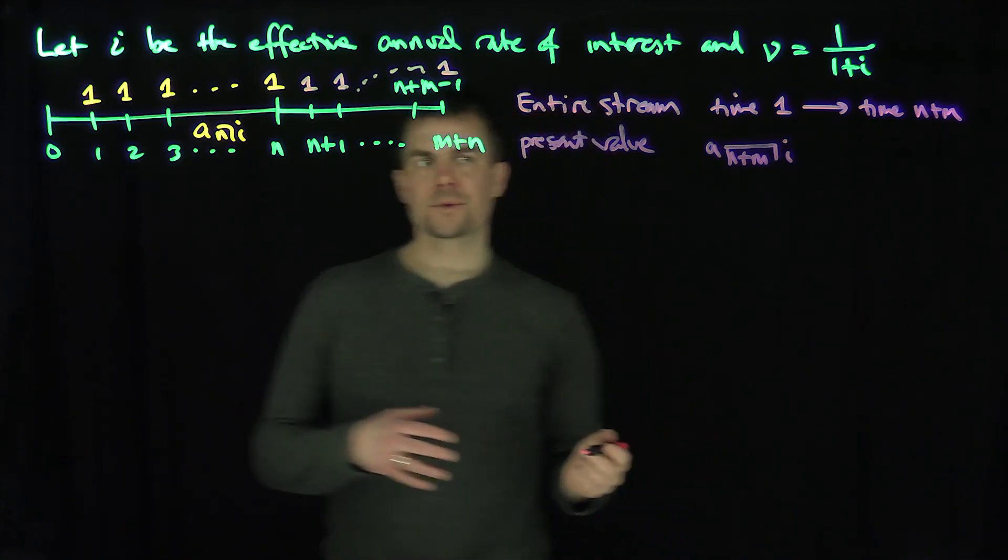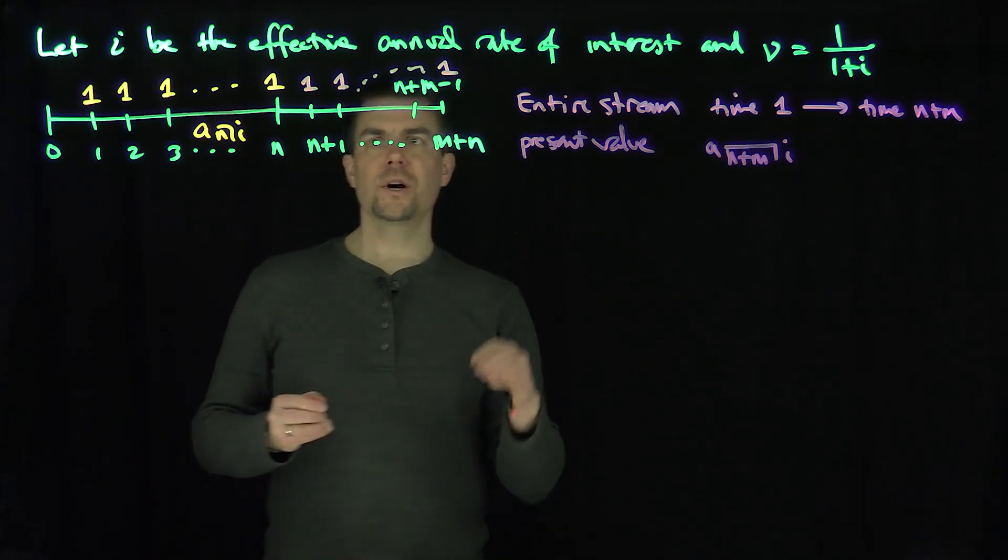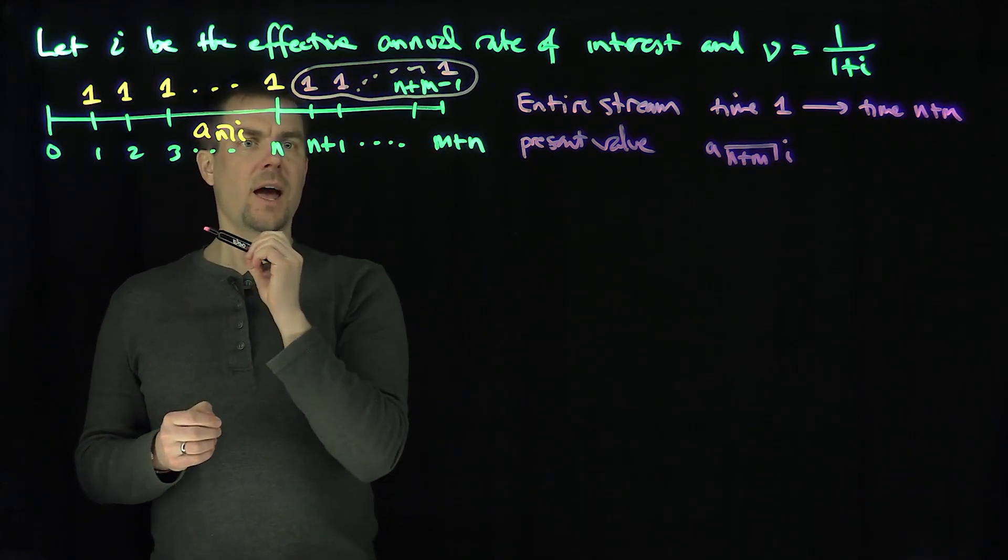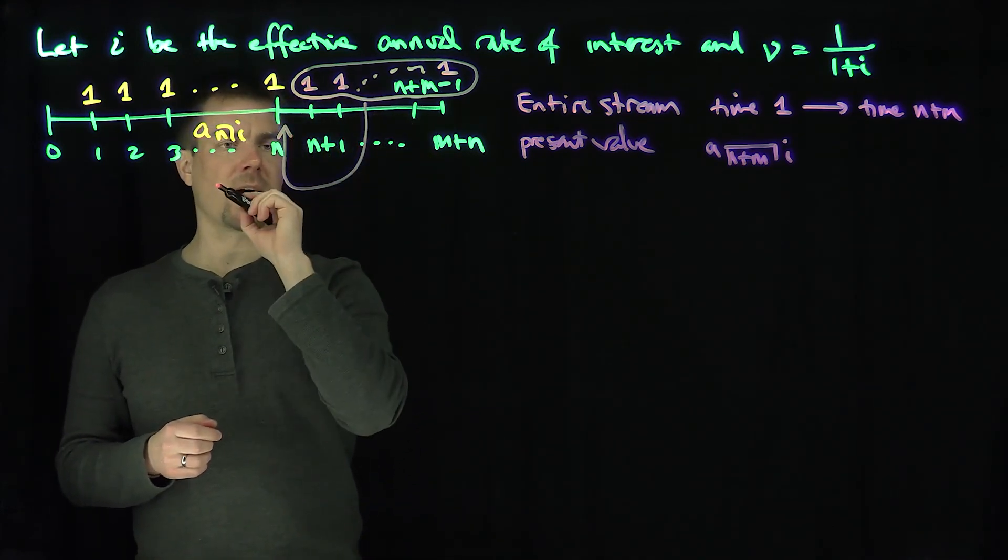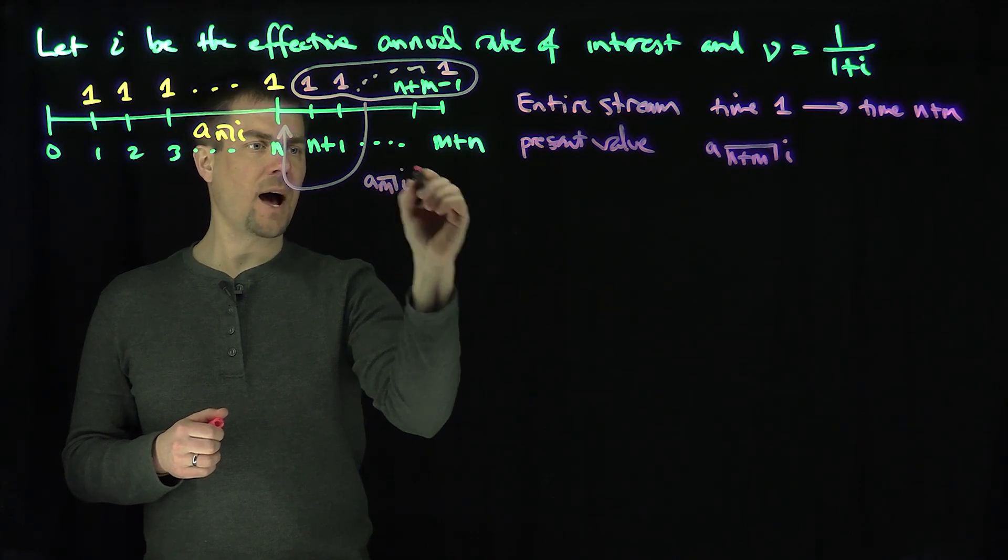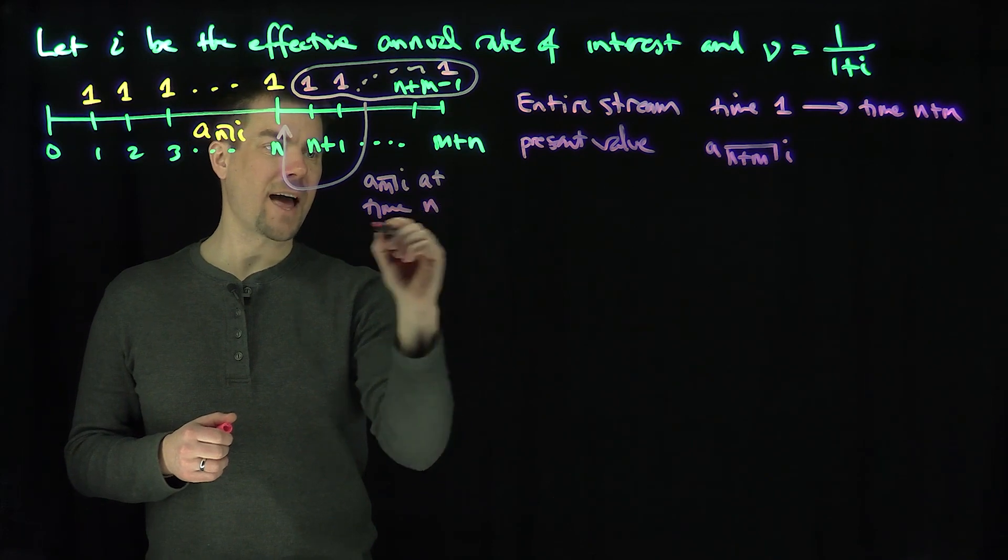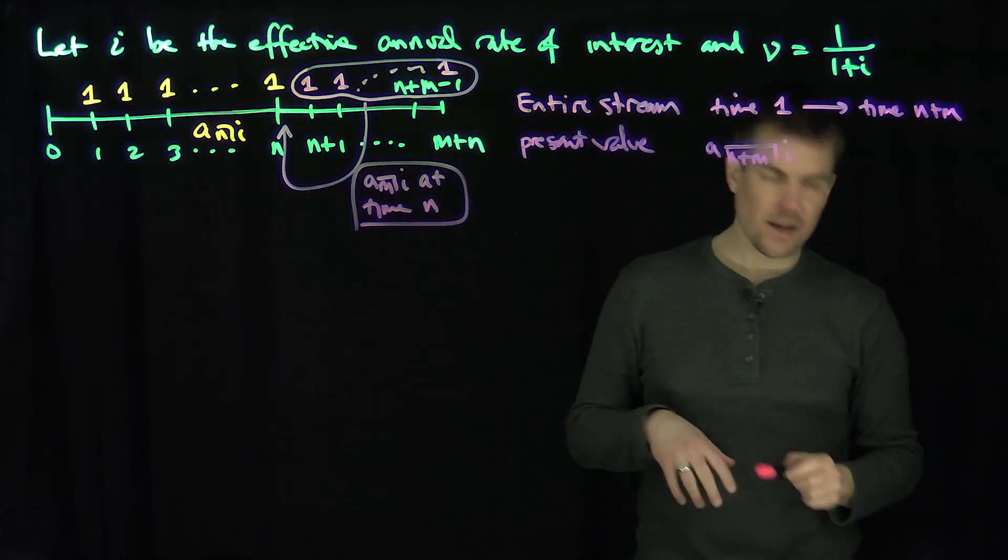Now the question becomes: how can I relate this to the a_n and the a_m? If we took this stream which starts at n plus 1 and look at the present value at this time, that would have a present value of a_m,i at time n, not at time zero, but at time n. So those extra payments would be an a_m,i at time n.